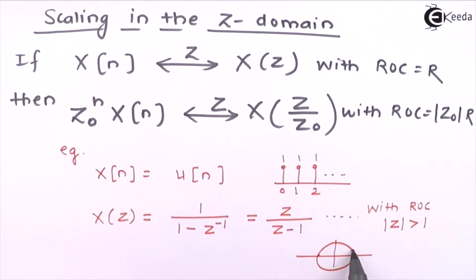This is mod Z equal to 1 and we will have the ROC exterior to this circle like this.